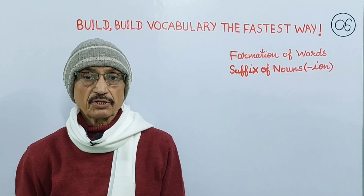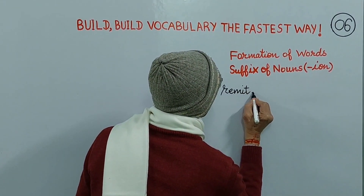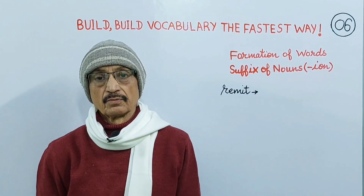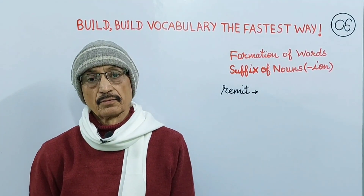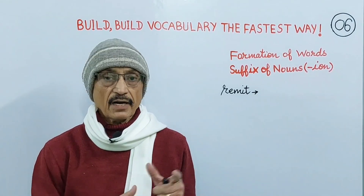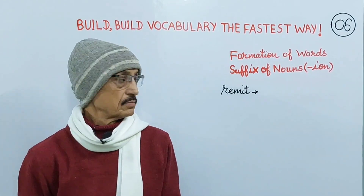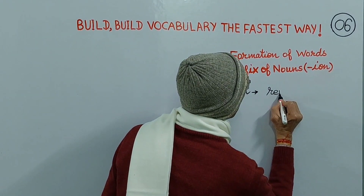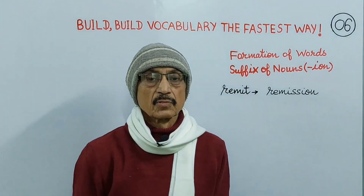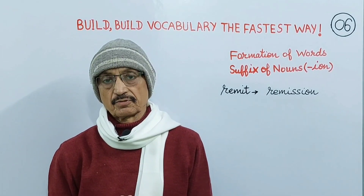Next comes remit. Remit means to give relief from suffering, to release from guilt, to cancel the penalty. When we add suffix I-O-N to it, it changes into its noun — remission. Remission means pardon, forgiveness, amnesty.